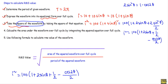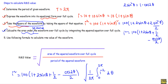Next, we calculate the area under the squared waveform over a full cycle by integrating the squared equation over the full cycle. I² = 100(1 + 2 sinθ + 1/2 − cos2θ/2). Integrating I² from 0 to 2π gives the area of the squared waveform over the full cycle. Dividing by the period 2π and taking the square root gives the RMS value of the current: I_RMS = √[(1/2π) ∫₀²π I² dθ].